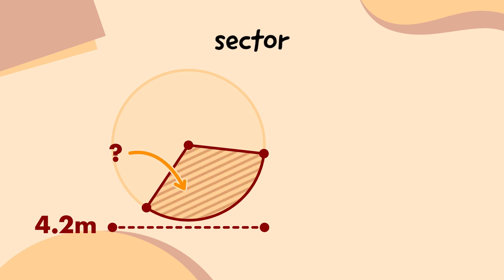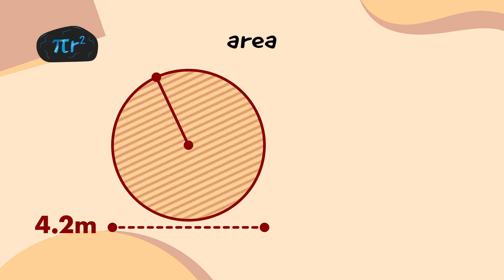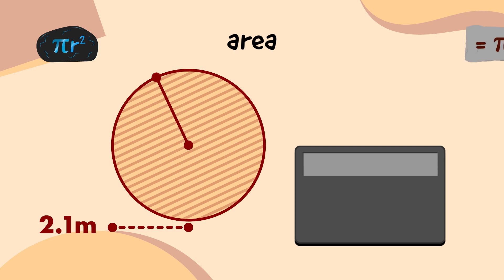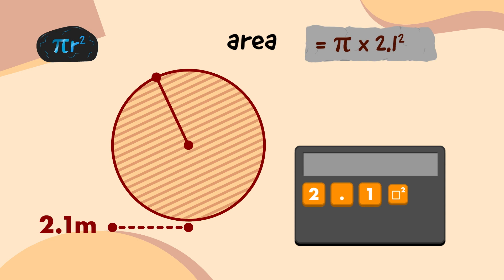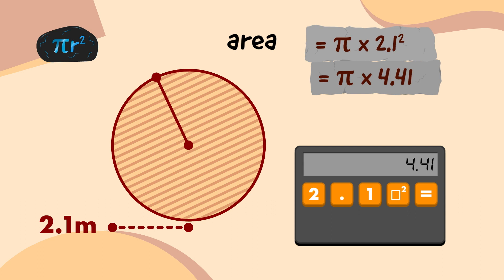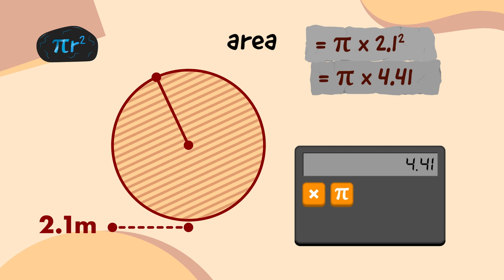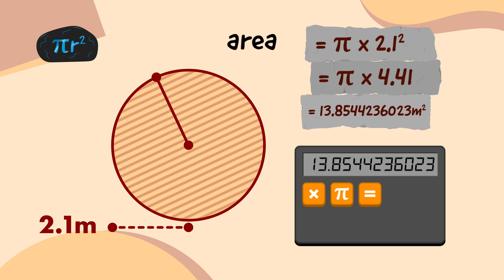Next, I'll work out the area of the sector that the vines cover. So I'll work out the area of the whole emblem first. If the diameter of this emblem circle is 4.2 metres, and the radius is always half as long as the diameter, that means the radius is 2.1 metres. So on my calculator, I'll type 2.1, press the square button, and press the equals button, which gives me 4.41. Then I'm going to multiply 4.41 by pi, which tells me that the area of the second emblem circle is 13.8544236023 square metres.